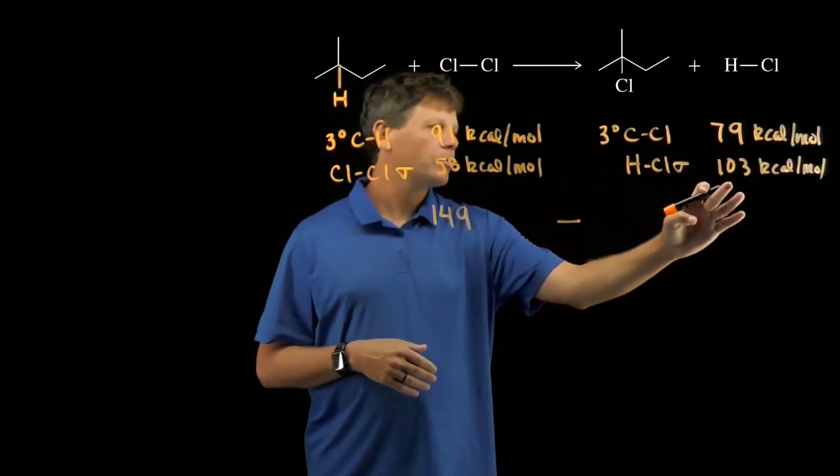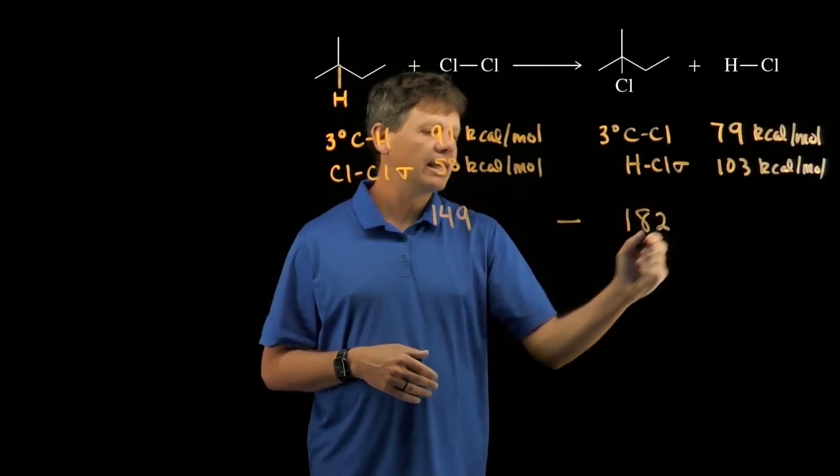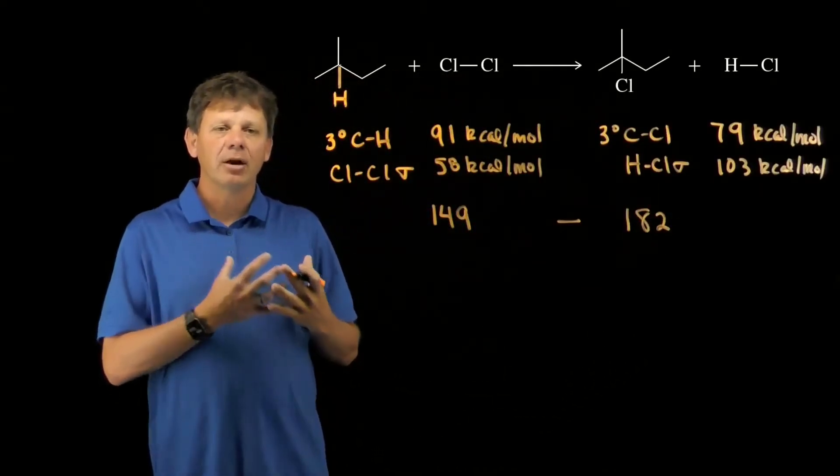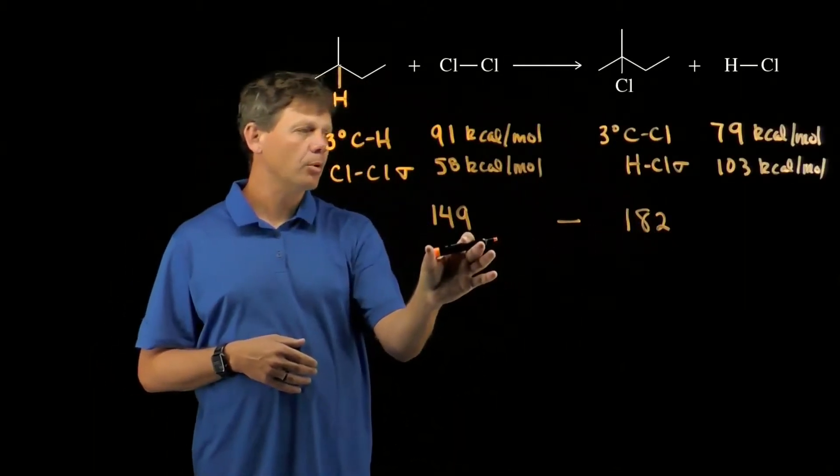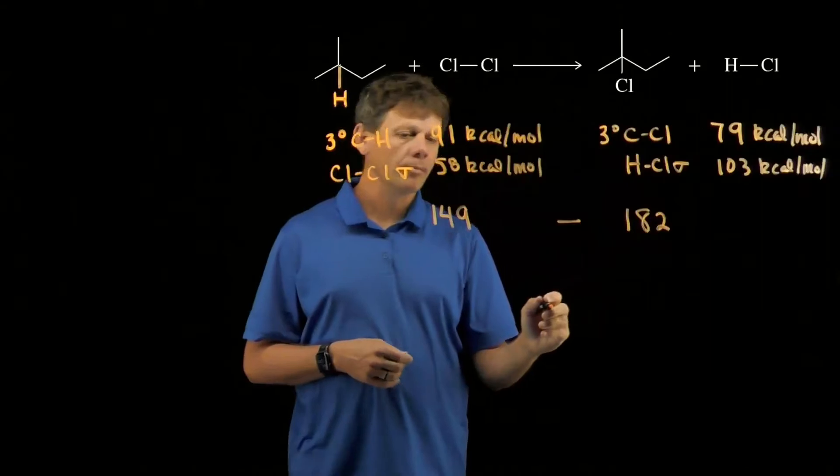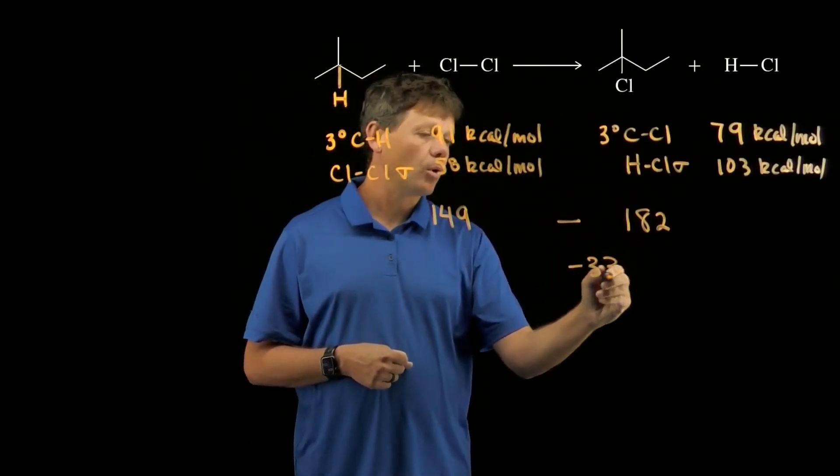79 plus 103 gives us a total of 182 kilocalories that are released. If we subtract the formed bonds from the broken bonds, we get a total of negative 33 kilocalories per mole for our value of delta H.